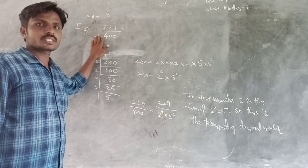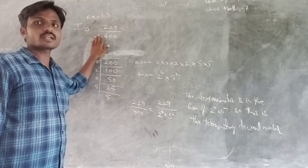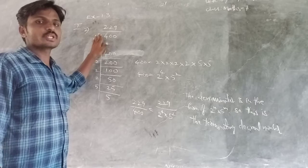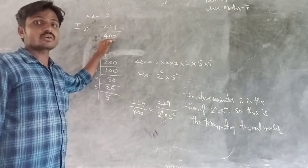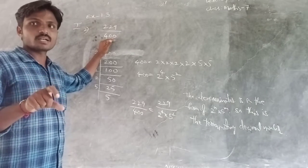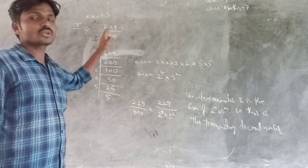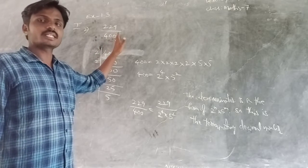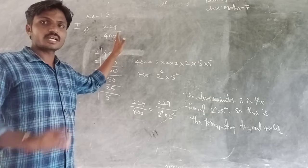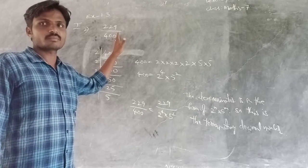How to check whether it is a terminating or non-terminating decimal number by using the denominator? If the denominator is in the form of 2 into 5, then it is terminating. If it is not 2 into 5, it is a non-terminating decimal number.